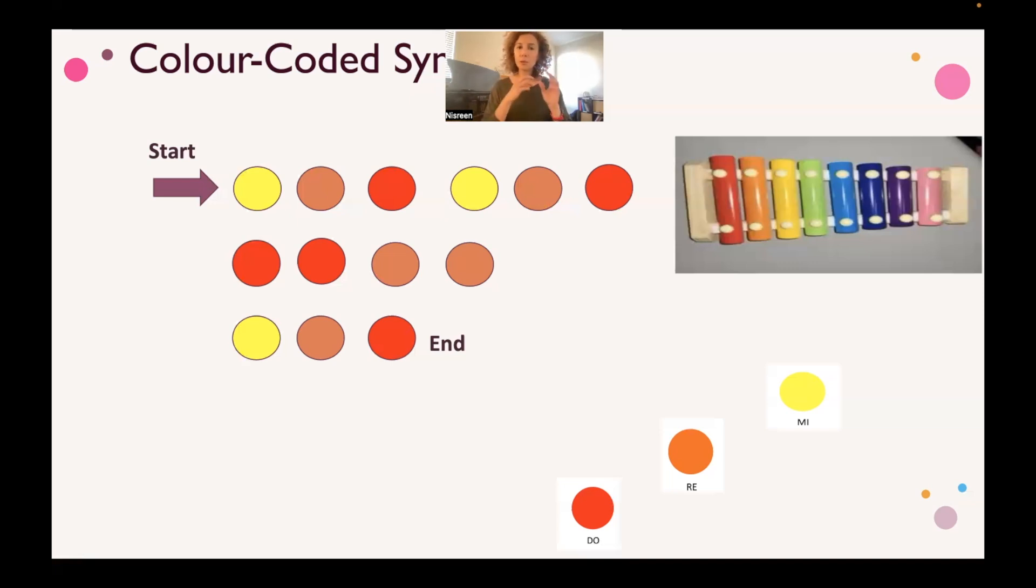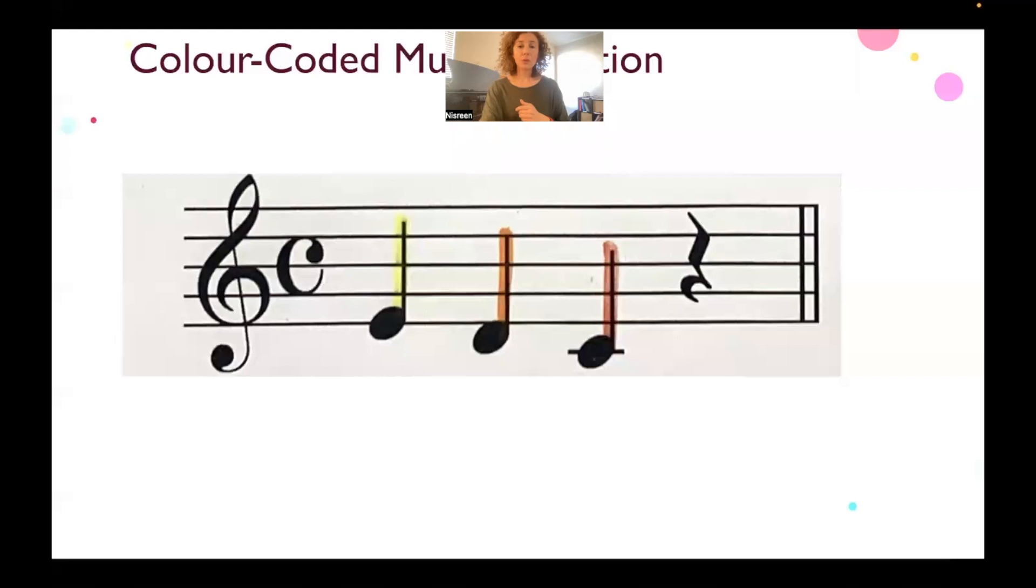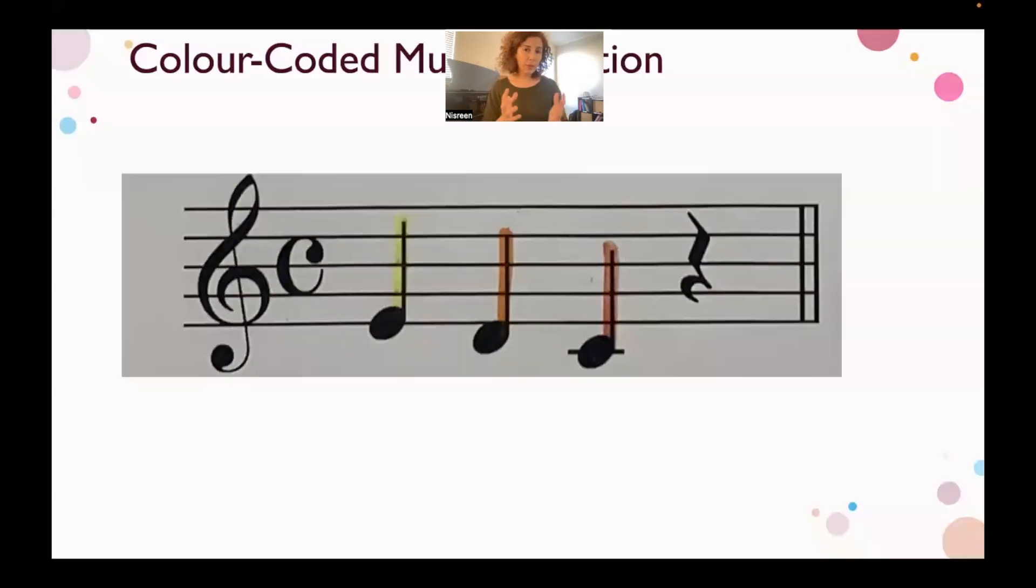And if you feel that the student can associate it with the letter names like C, D or Do, Re, Mi, then you can use, as you can see on the slide, color-coded with the note name. For students who can read traditional notation with a bit of help, you can color out the notes with the surface colors—that might also help the students go through the traditional notation music reading.